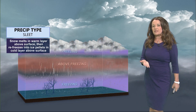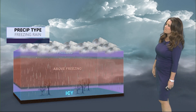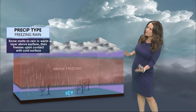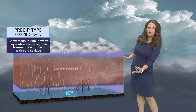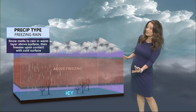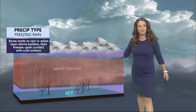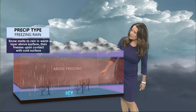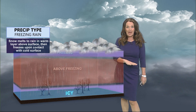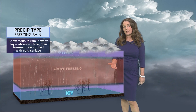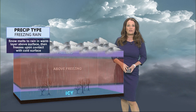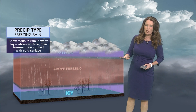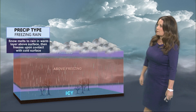With freezing rain, snow is being formed aloft and then we have a much bigger area of warm air above the surface. When that snowflake falls through, it will melt completely. But then at the surface we have temperatures at or below the freezing mark, so when that liquid precipitation falls on those surfaces it will freeze on them — a very dangerous part of winter precipitation.